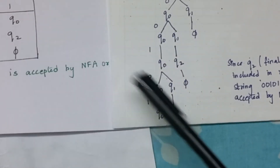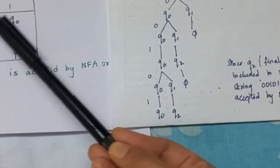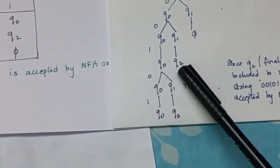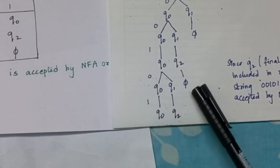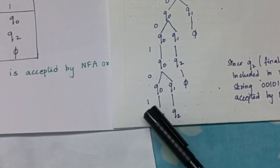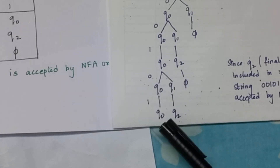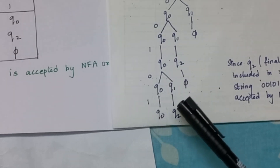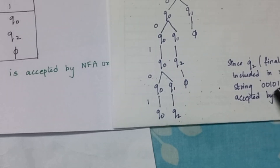The next symbol is 0. I get the result as q0, q1. With q2 and 0, I get null — null to be left. The last one is 1. q0 with 1 gives me q0. q1 with 1 gives me q2. Since q2 was my final state and is included in the result, the string is accepted by the NFA.